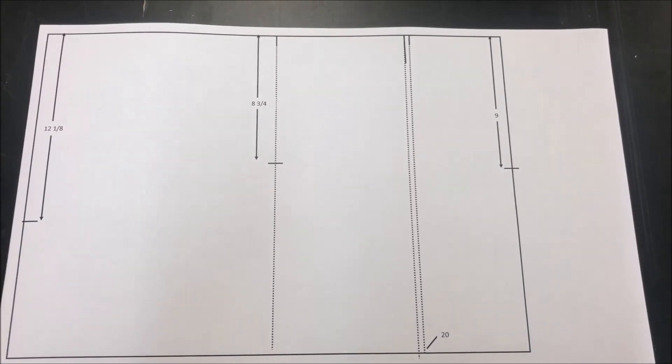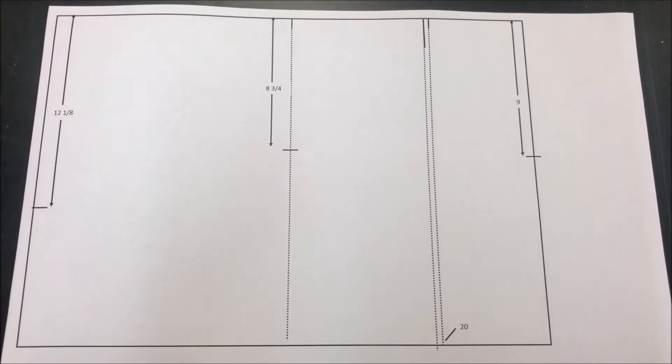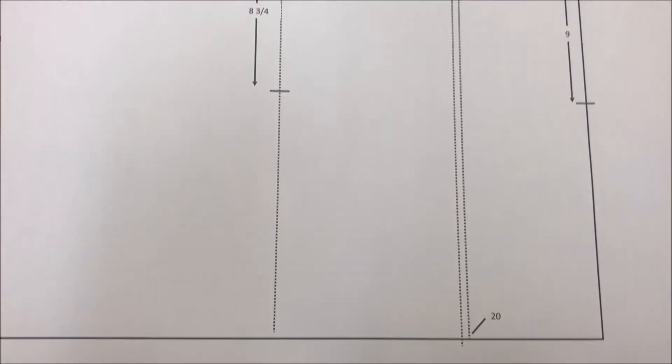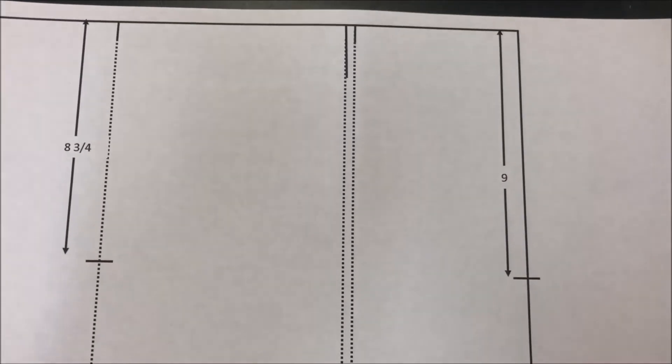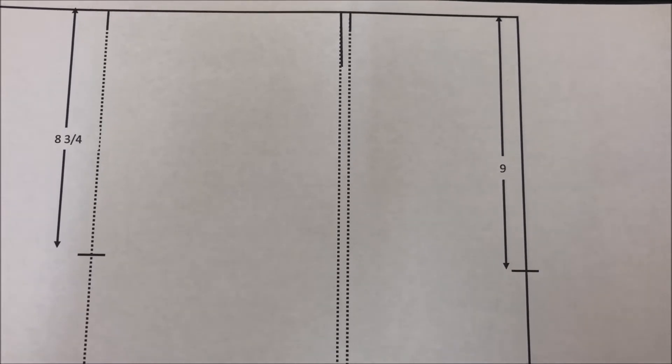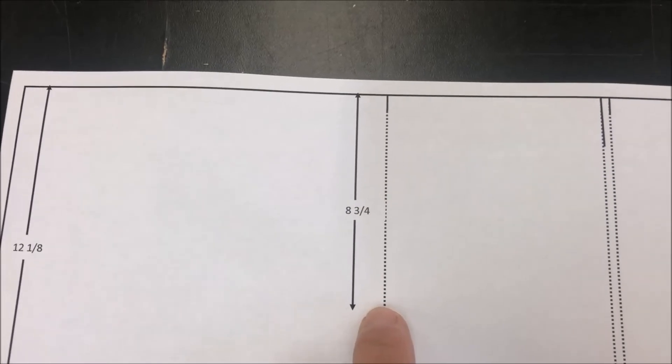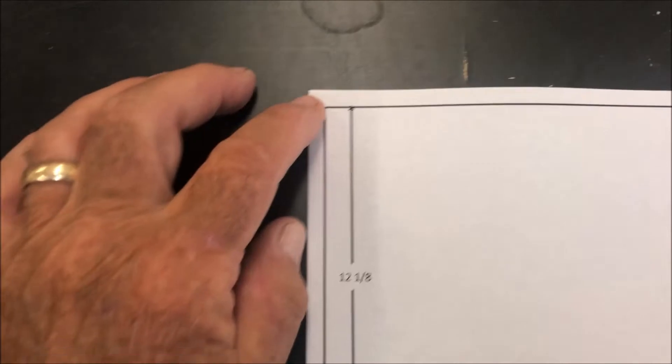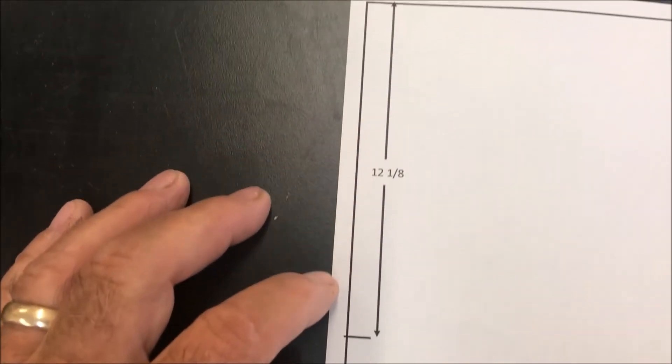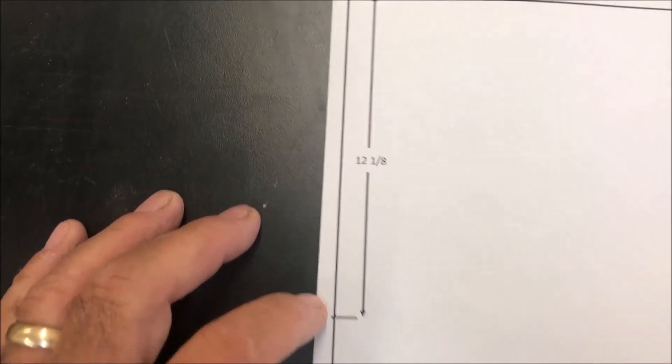In the next step you're going to take those three tick marks and extend them all the way across the page so they come down to the bottom, and then we're going to add four more tick marks. We're going to come down from the top of the sheet nine inches and make a tick mark, then come down on that tick mark eight and three quarters inches and make a little mark, and then on the far side of the page we're going to come down 12 and an eighth and make a little tick mark.